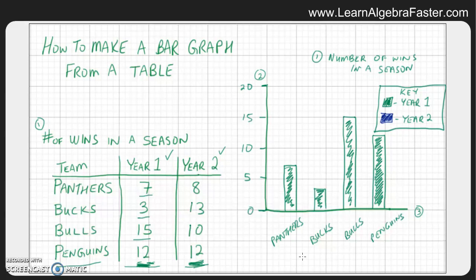Like I said, you could change the way the groupings are ordered, but once you choose a grouping, you have to stay consistent, so we need to keep this same order. The Panthers won eight games in year two, and we need to keep that right next to the Panthers in year one. So that bar goes right here for eight games. The Bucks won 13 games in year two.